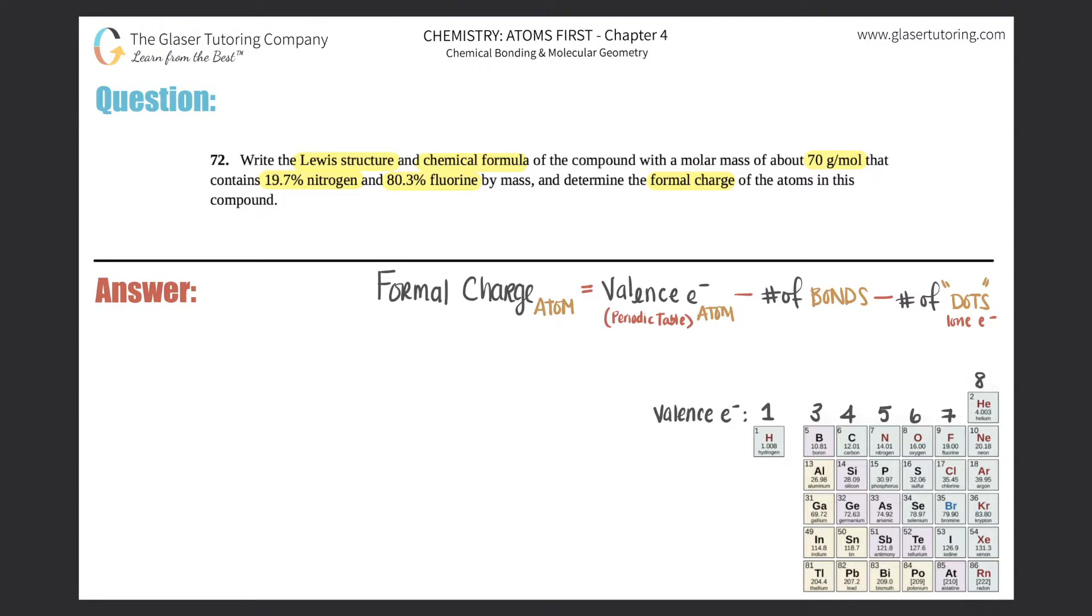We've done it a couple times, but just as a reiteration, you could always go from a percent to grams of an element or atom, and then from that we know how to go from grams to moles. That was chapter one or two, and then you can get a mole ratio.